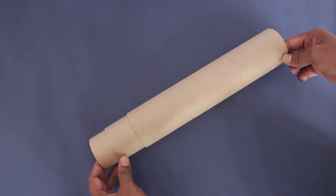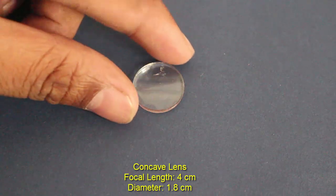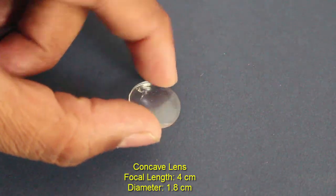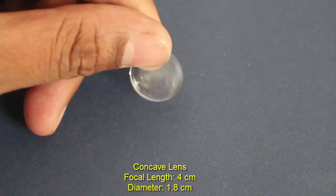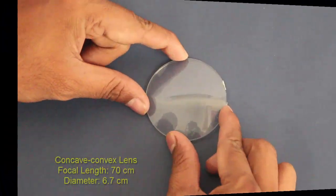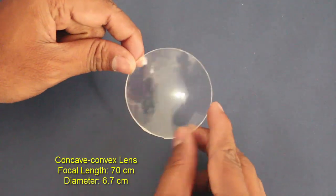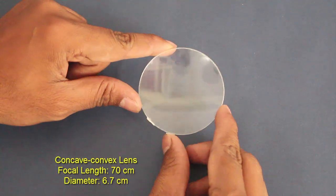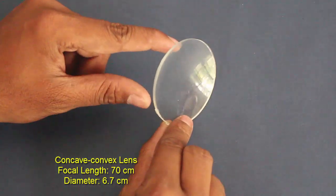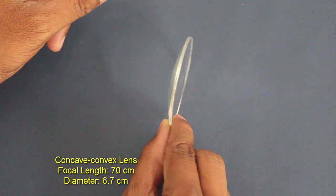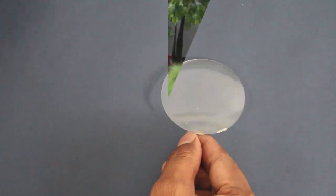These sliding tubes are called telescopic tubes. Now this is a small eyepiece. It has a focal length of 4 cm and a diameter of 1.8 cm. The larger lens is the objective lens. It has a focal length of 70 cm and a diameter of 6.7 cm.